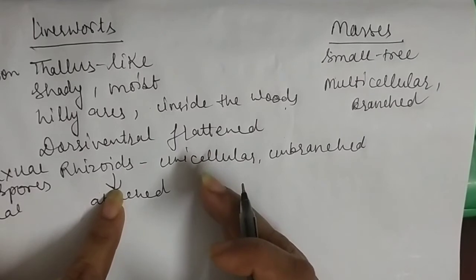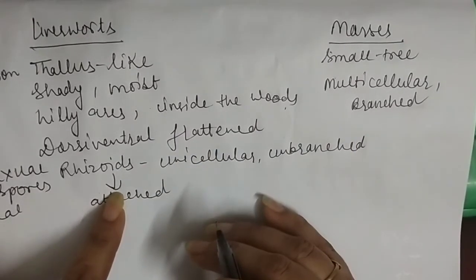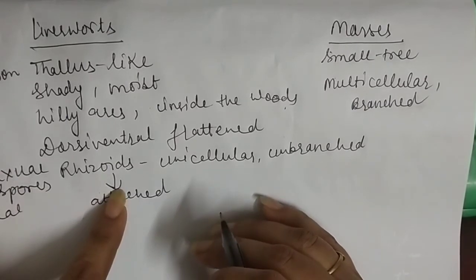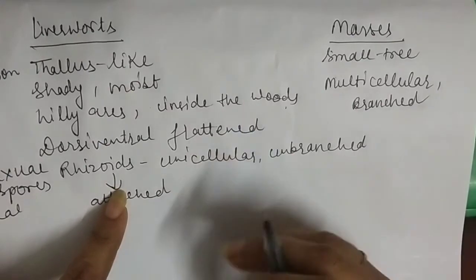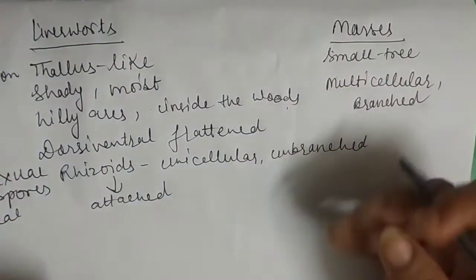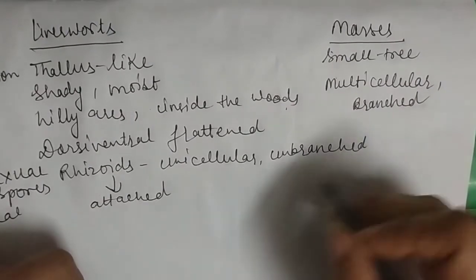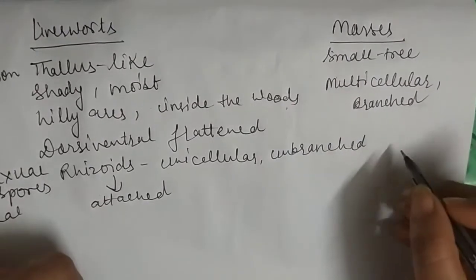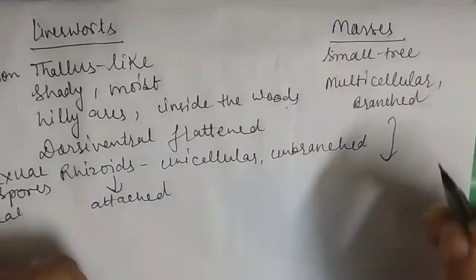For vegetative reproduction in mosses, fragmentation occurs. For asexual reproduction, gemmae cups are not present. Instead, mosses produce buds. When buds get good conditions, they can develop into a new organism. This is where the start of the life cycle is located.